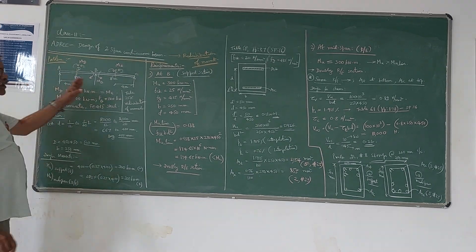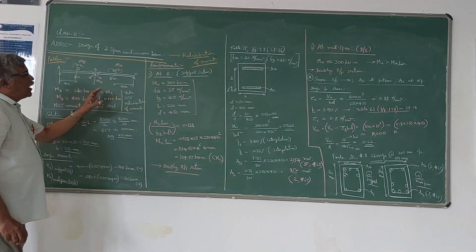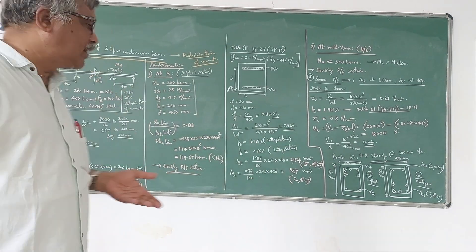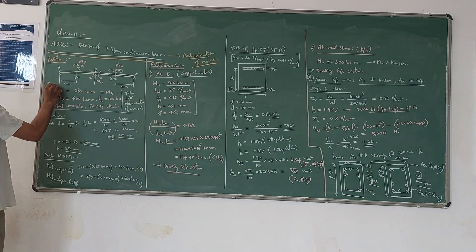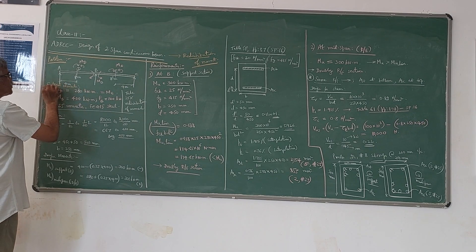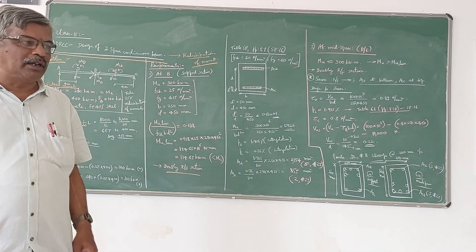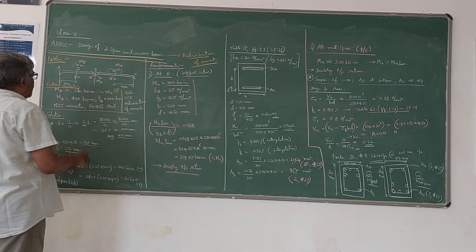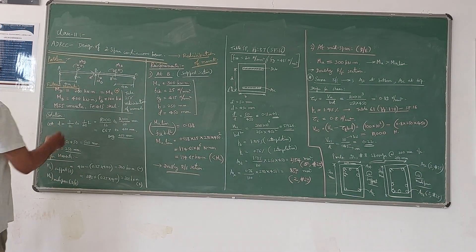The beam is simply supported at all three supports, with a span of eight meters. Instead of giving the loads, I will take the factored moments directly. The factored midspan moment M at midspan is given as 200 kNm, which is sagging in nature. And at support B, the moment is 100 kNm, which is hogging in nature.